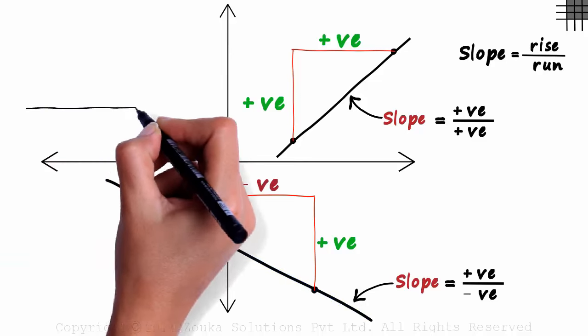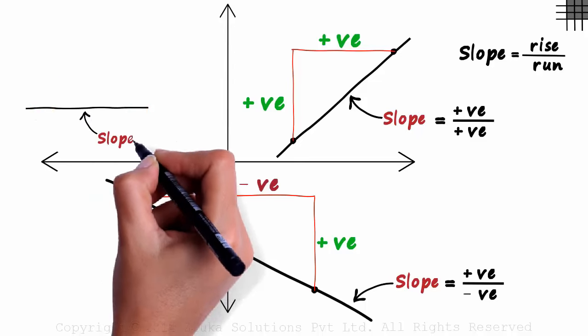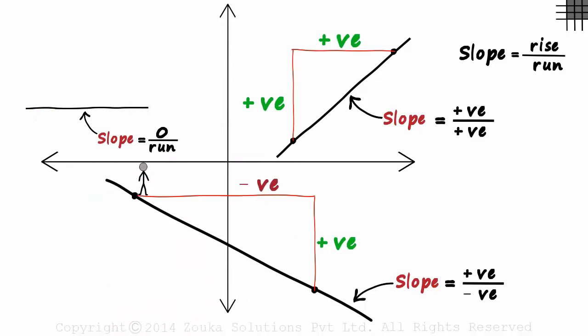What about the slope of this line which is parallel to the x axis? You don't really need to mark two points to find its slope. It has no tilt. It means the rise will be zero. So the slope will equal zero over run which is zero. The slope of the x axis is also zero.